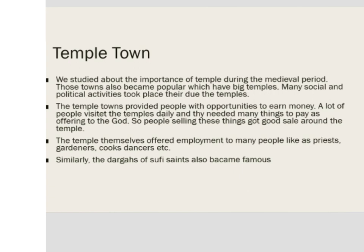Now, when we talk about medieval India, we have both types of rulers: first we have Hindu rulers, then we have Muslim rulers, and after that the British East India Company. Temple towns — that means those towns where we find big temples, or those temples which have historical importance, or those made by kings which are large in size. With the passage of time, as people used to visit such temples, these towns also got importance. We studied about the importance of temples during the medieval period, and those towns also became popular which had big temples.